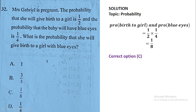Question number thirty-two is on probability. Mrs. Gabriel is pregnant; probability of a girl = 1/2, probability of low height = 1/4. Probability of a girl with low height = (1/2) × (1/4) = 1/8. The correct answer is option C.